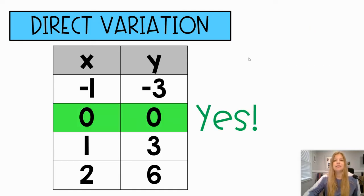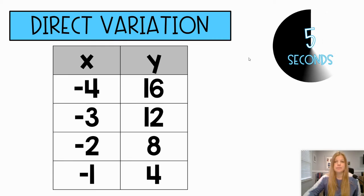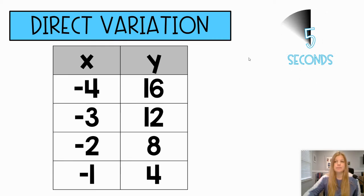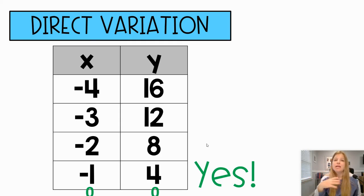For this one you don't see zero-zero, but think about it: if the x values are negative four, negative three, negative two, negative one — the next value would be zero. And if I continue this trend going down four, down four, down four, down four, I get zero. So zero-zero is part of this table if I extend it. The answer is yes.